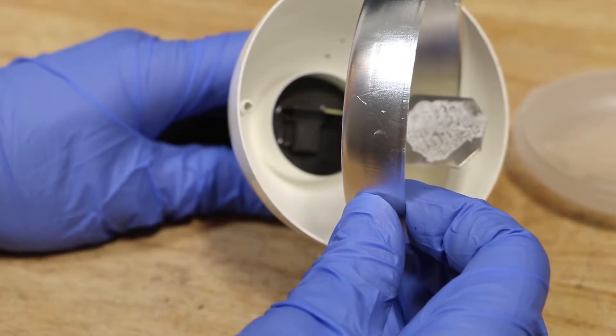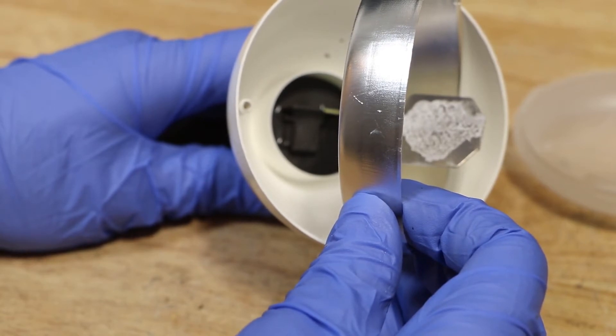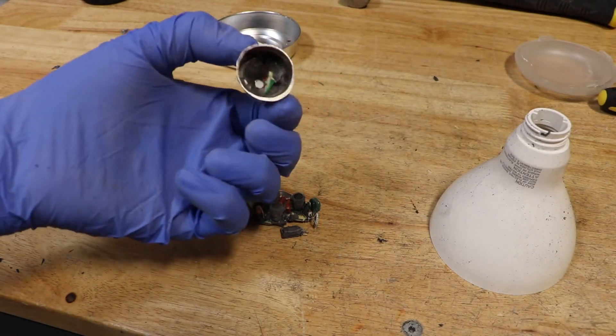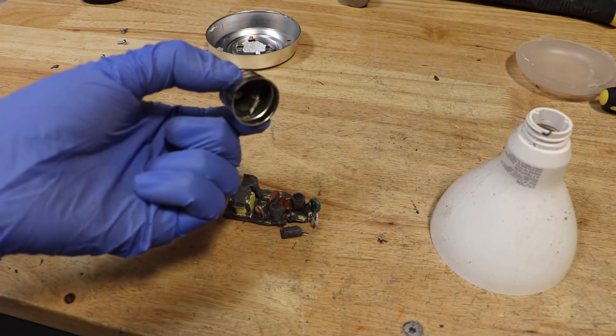At the bottom of the light appears to be a ballast that's encased in an epoxy. I used a pair of pliers to remove the electrical connector and here we can see that it was soldered on and I broke part of the little circuit board.